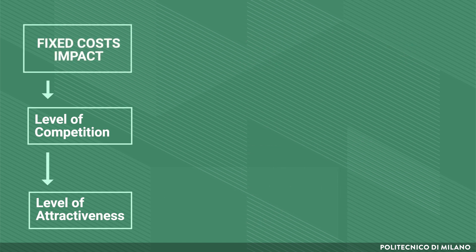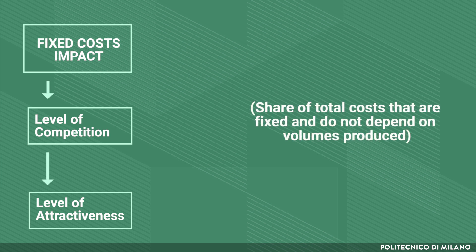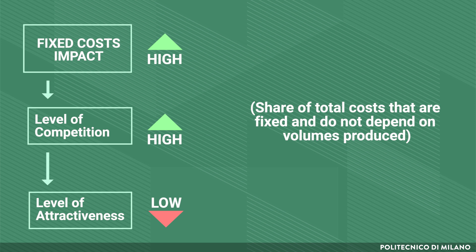Fixed cost impact refers to the share of the internal rival's total costs that are fixed and do not depend on volumes produced. When fixed costs are high in an industry, all competitors will try to increase production so as to spread their fixed costs over bigger volumes and cut unit costs. But when all competitors behave like this, the overall market supply will increase. Provided that market demand is not necessarily increasing too, this determines an excess supply where quantity supplied exceeds demand. As a result, prices will drop, reducing the industry's average margin and in turn attractiveness.